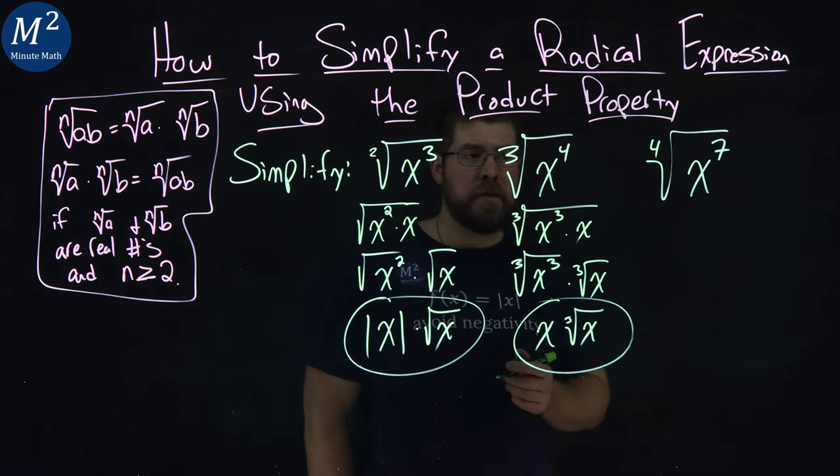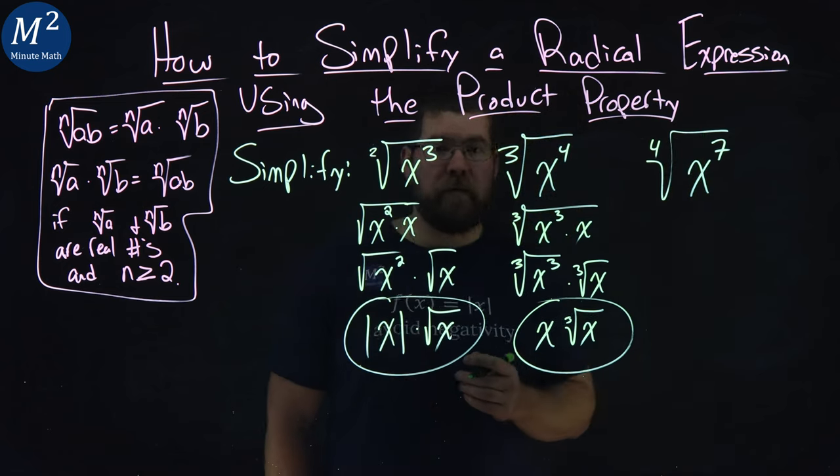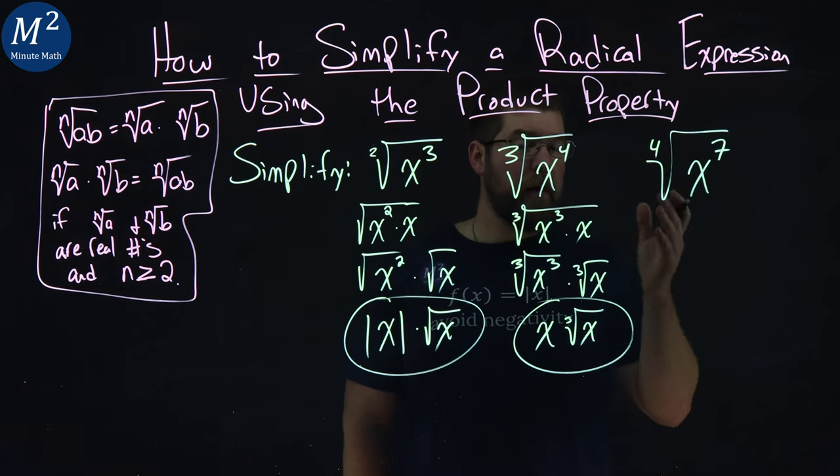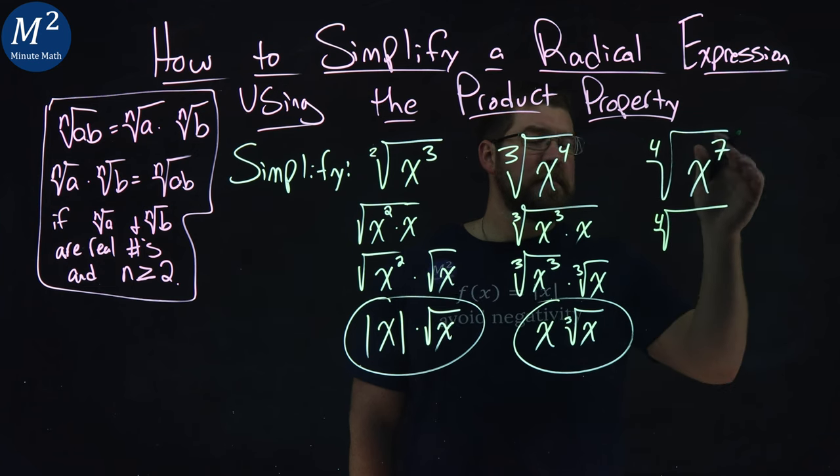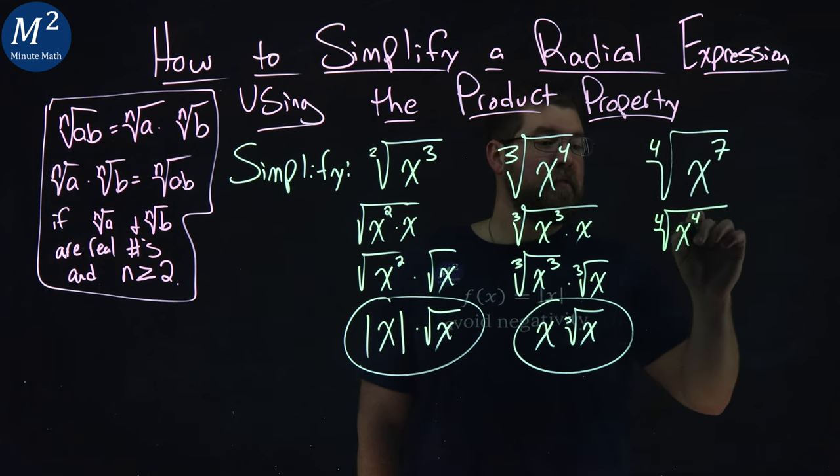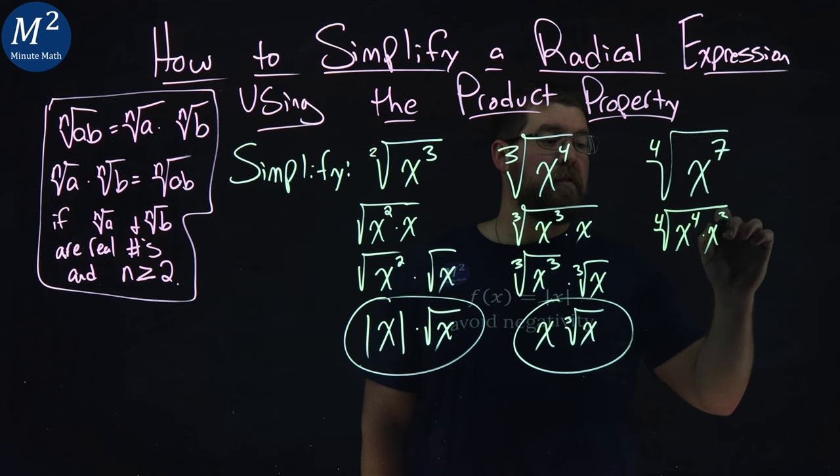Now lastly here, a little more difficult, fourth root of x to the seventh power. Again, we're looking for a perfect fourth. And so the fourth root of x to the seventh can be broken down to be x to the fourth times an x to the third.